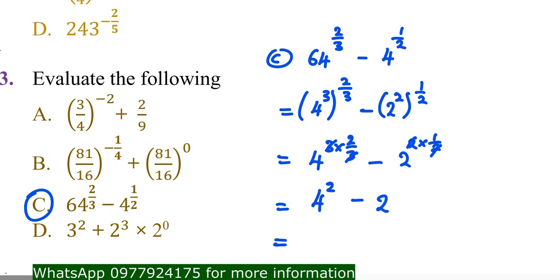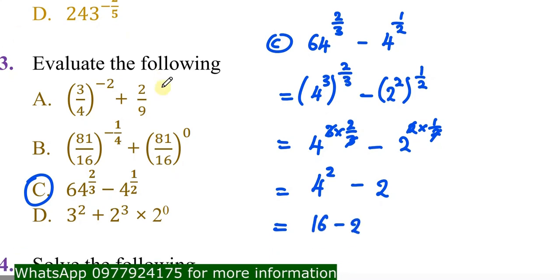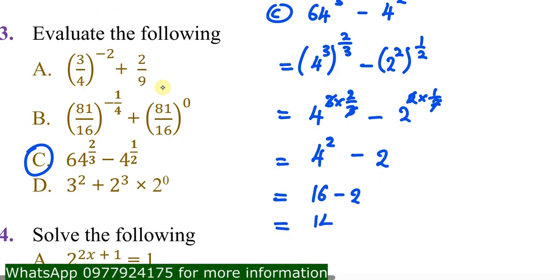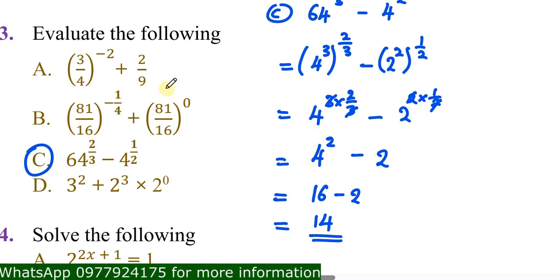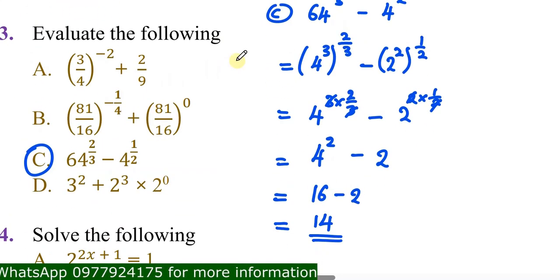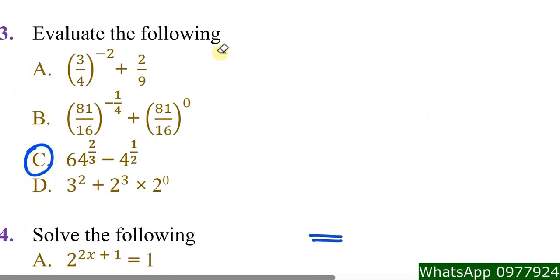4 to the power 2 is 16, minus 2 equals 14. So the answer for part (c) is 14. See — mathematics is simple; this is what you fear!